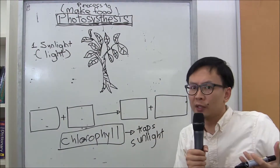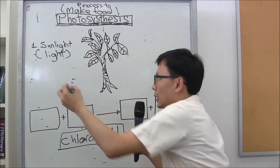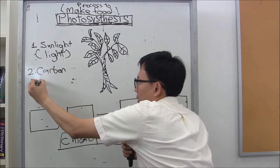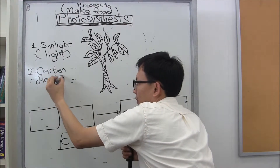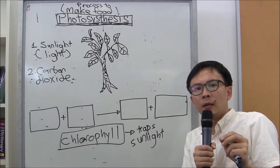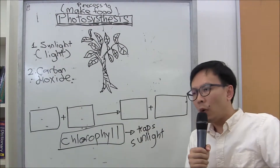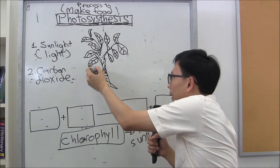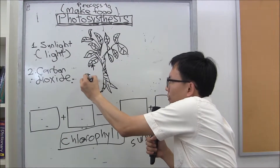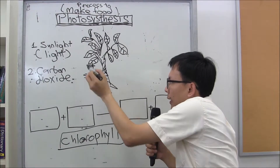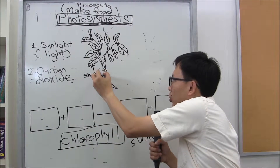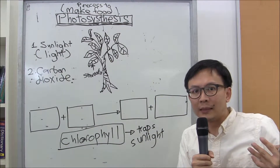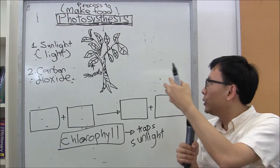What else is needed for photosynthesis to occur? The next condition is carbon dioxide. Plants also need carbon dioxide in order to make food. And where can plants get carbon dioxide from? From the surrounding, because the underside of leaves — you learned in P5 — contains tiny openings called the stoma for a single opening, or stomata. Stomata are tiny openings where there's an exchange of gases, so carbon dioxide enters the plant through the stomata.